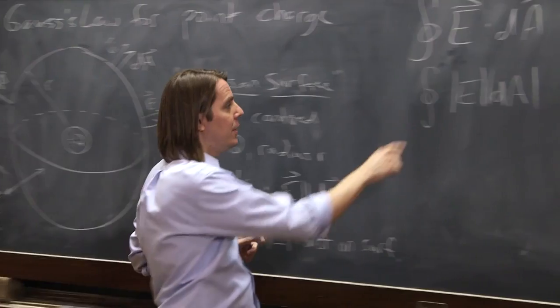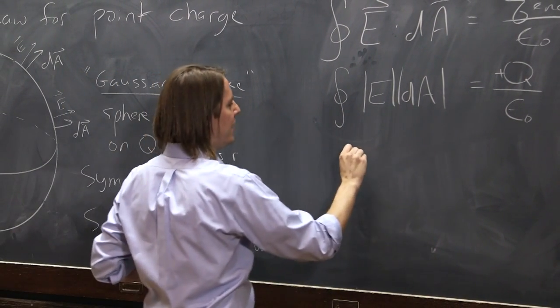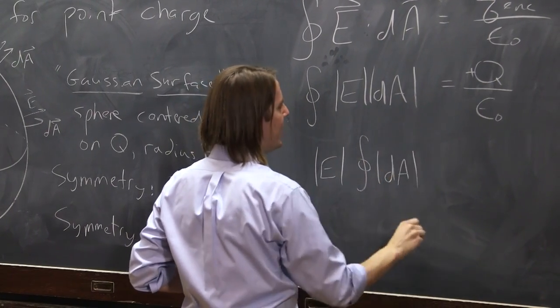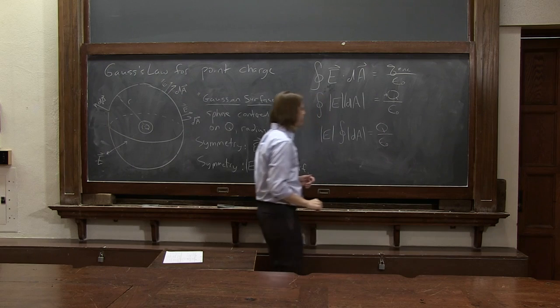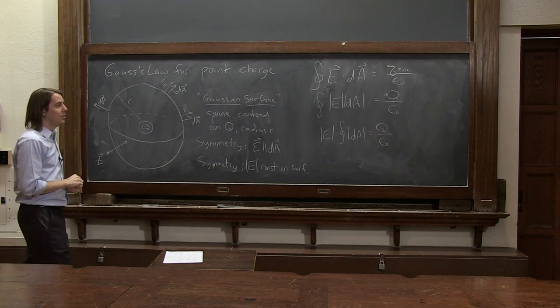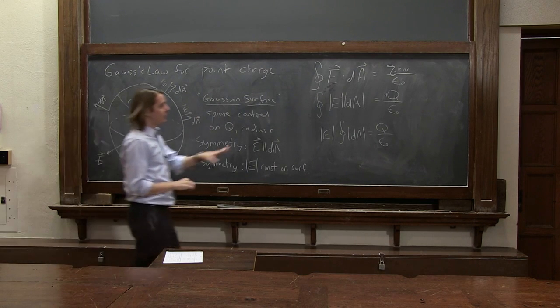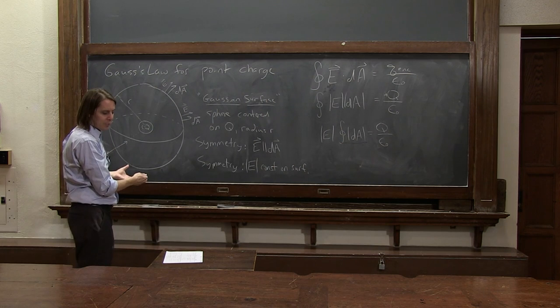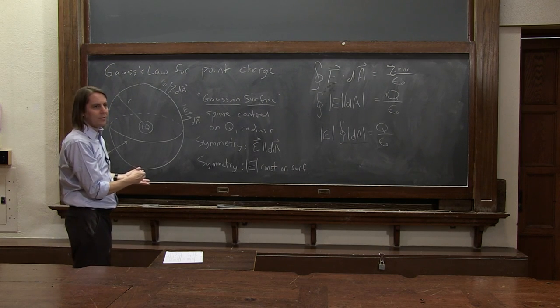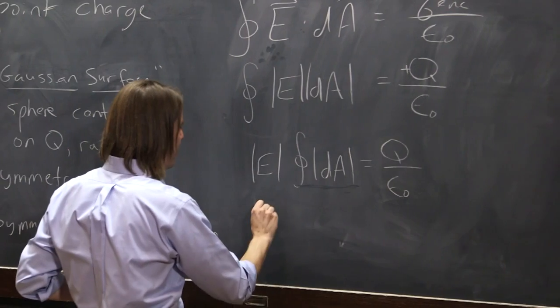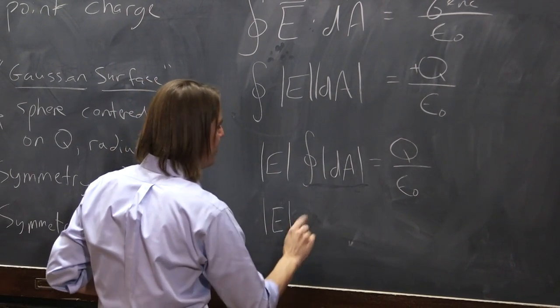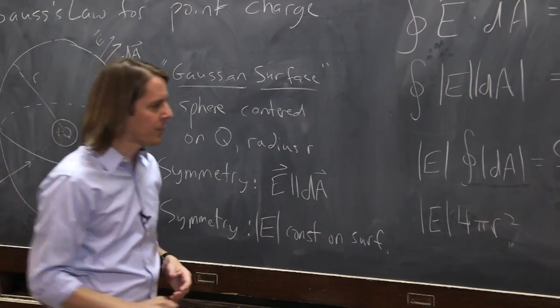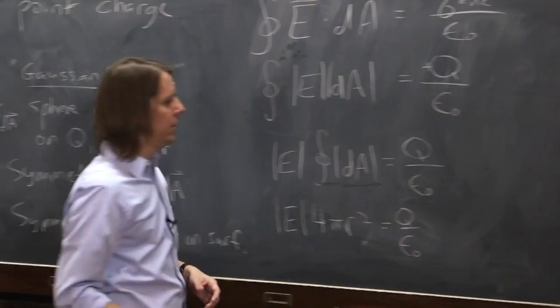If E is constant, you can take it out of the integral. So now we have E magnitude times the integral of DA magnitude equals Q over epsilon naught. Now we can solve for E! This integral is just the area of the surface. The magnitude of E times the area of a sphere, 4 pi r squared, equals Q over epsilon naught.